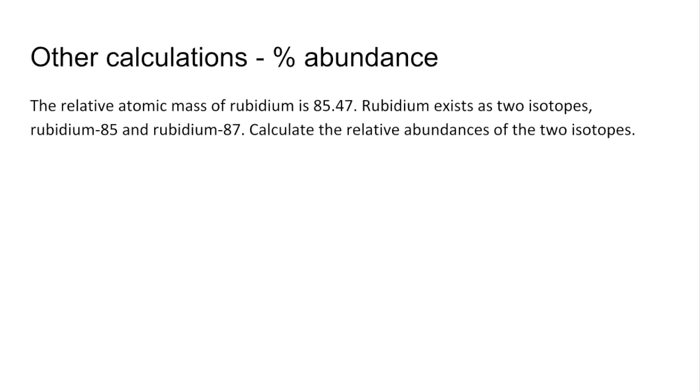So the final type of calculation is where you get asked to calculate the percentage abundance of an isotope. In this calculation, I'm getting us to do both of the isotopes. So we're told the relative atomic mass, 85.47. Two isotopes, 85 and 87, calculate their relative abundances. So I call this a tug-of-war calculation. You'll see why when I go through it. So we'll put a number line in, 85 and 87, for your two isotopic masses.